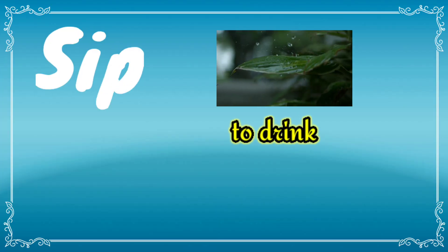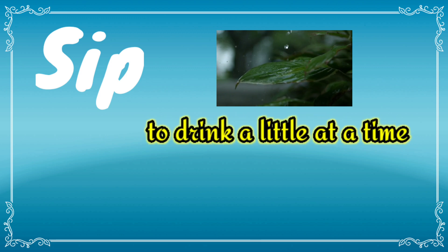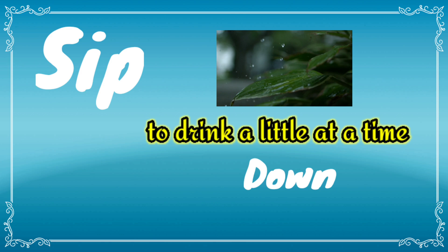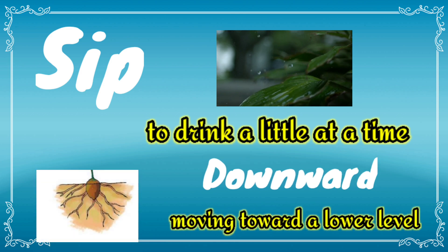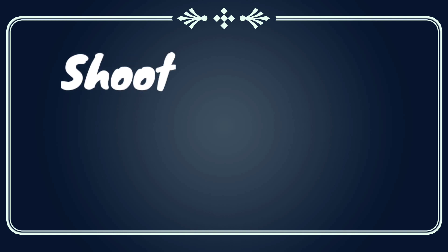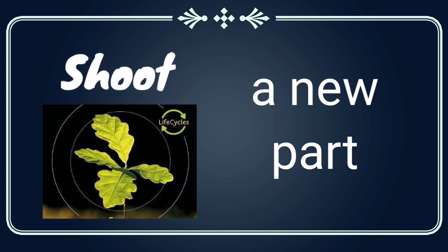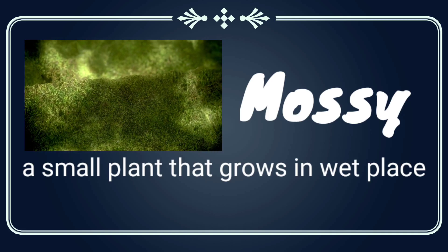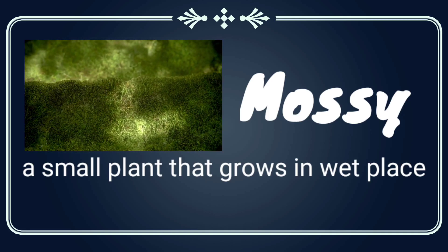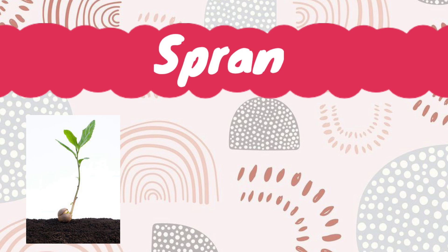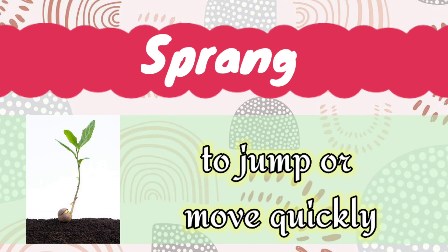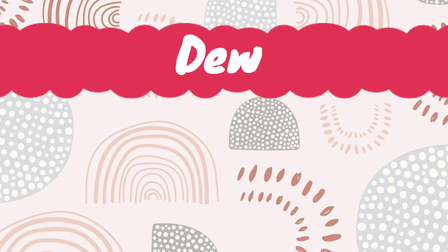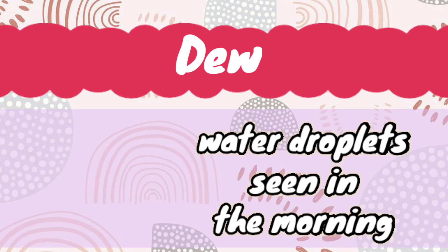Now let us learn the word meanings. The first word is 'sip' — its meaning is to drink a little at a time. Second word is 'downward' — its meaning is moving toward a lower level. Third word is 'shoot' — its meaning is a new part of a plant. Fourth word is 'mossy' — its meaning is a small plant that grows in a wet place. Fifth word is 'sprang' — its meaning is to jump or move quickly. Sixth word is 'dew' — its meaning is water droplets seen in the morning.